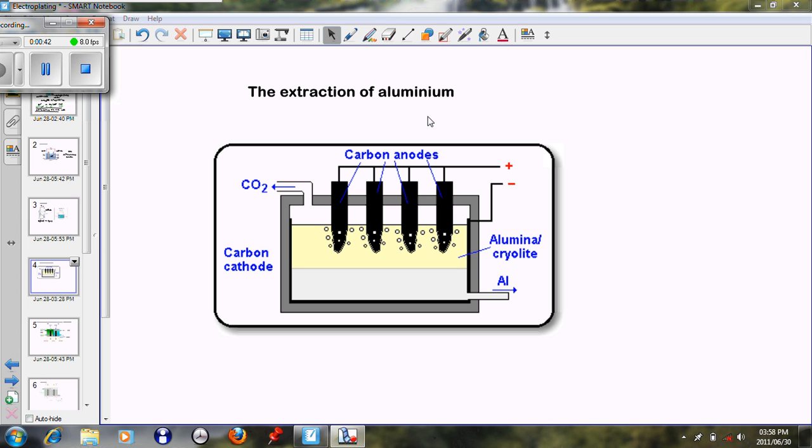The extraction of aluminium. We see that aluminium is found in high quantities in Australia and it is shipped to South Africa because South Africa has a cheaper form in which they can extract aluminium.